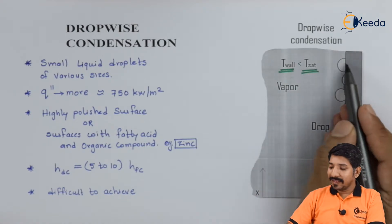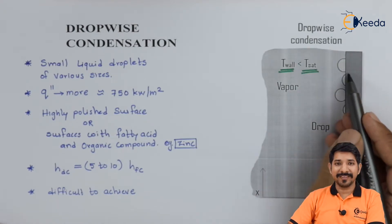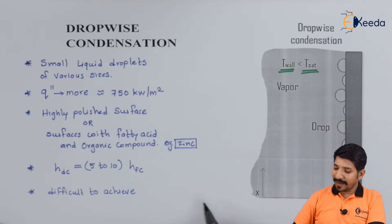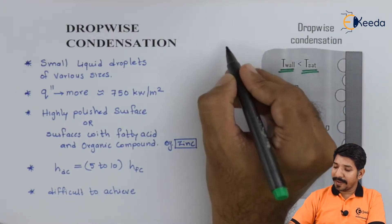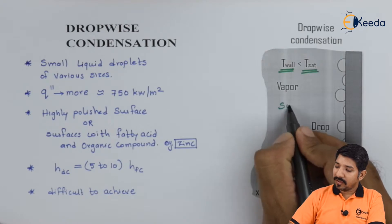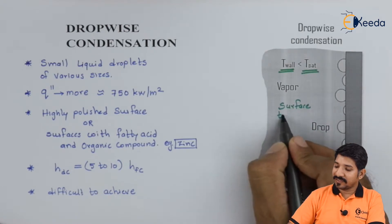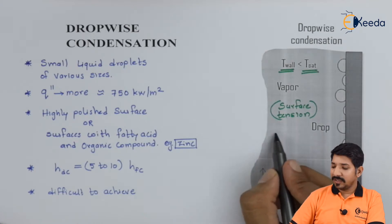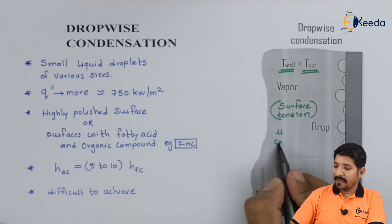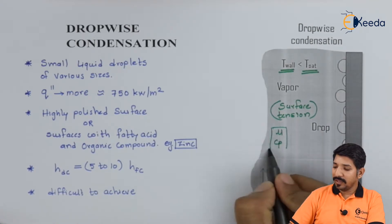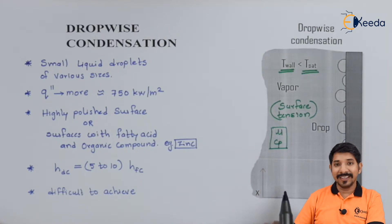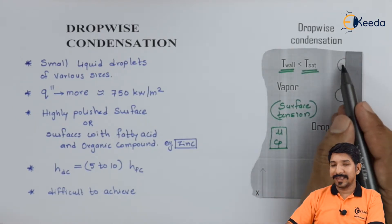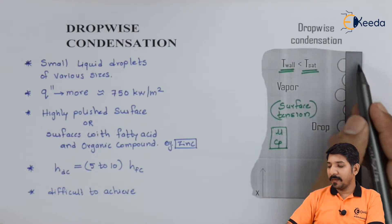These droplets can be of various shape and size, and this will depend on many parameters. The most important parameter is the surface tension. Apart from surface tension, it is the mu (viscosity) and Cp value for the given fluid that will decide what the size of a droplet formed over the wall should be.